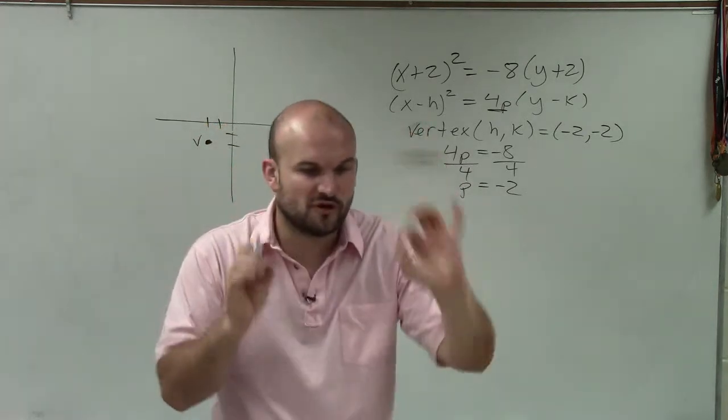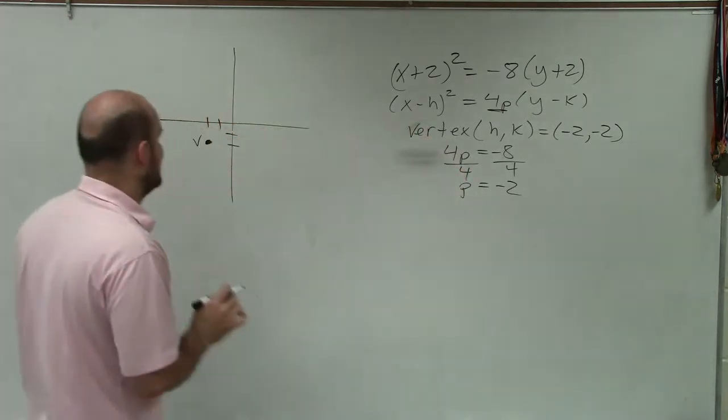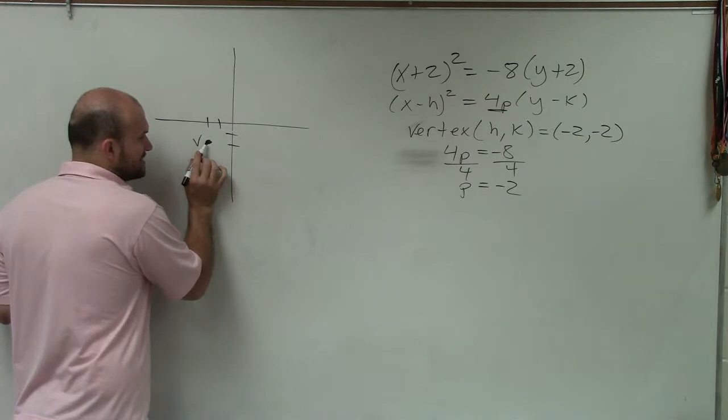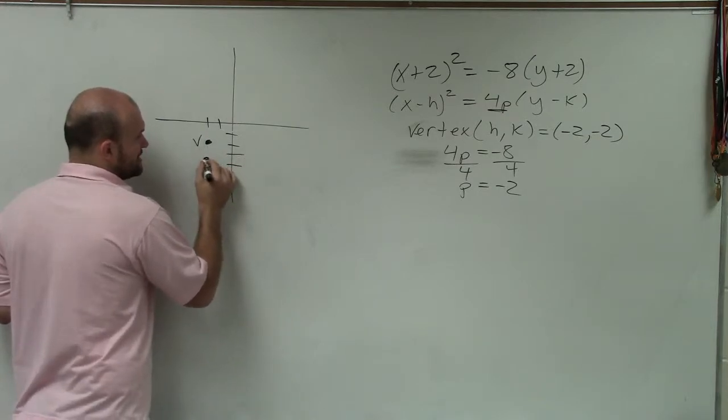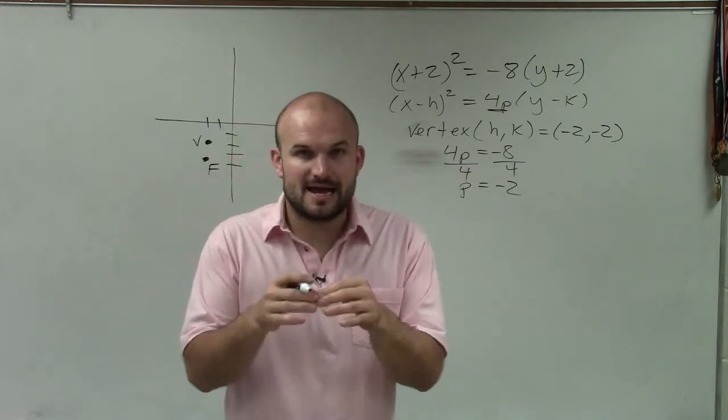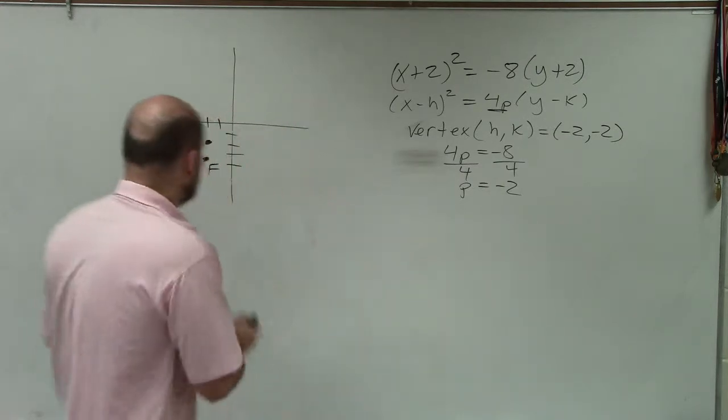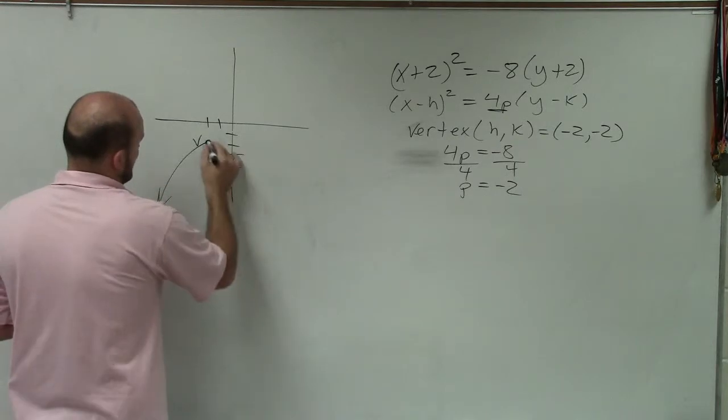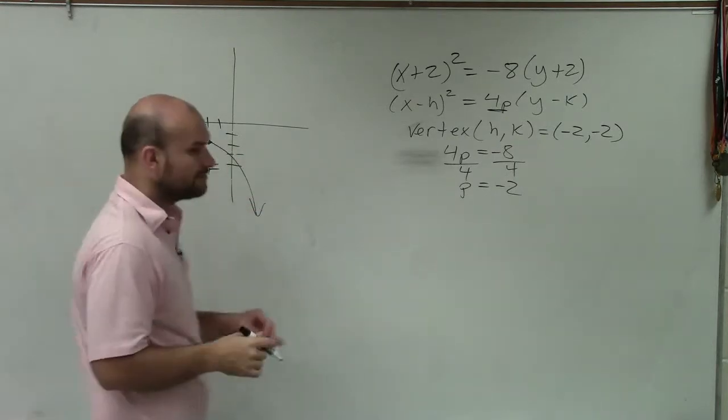So therefore, the distance from the vertex to the focus is -2. So from the vertex, I'm going to go down two units. And that's going to tell me what the focus is. Now, since a parabola, remember the focus is in the interior of the parabola, so therefore, my parabola is going to be shaped in the downward direction.